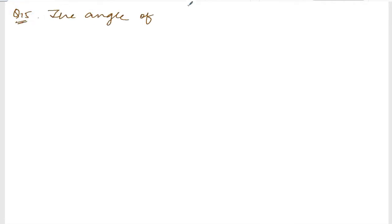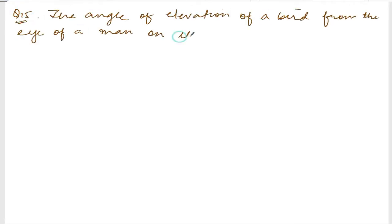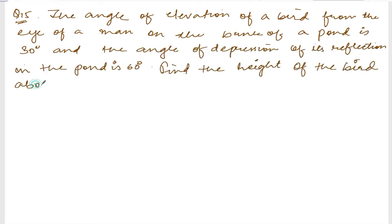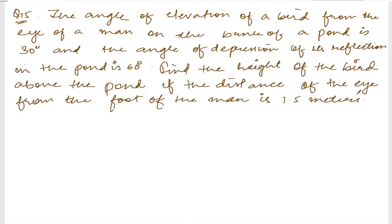We are doing exercise 11.4, question number 15. The angle of elevation of the bird from the eye of a man on the bank of a pond is 30 degrees.